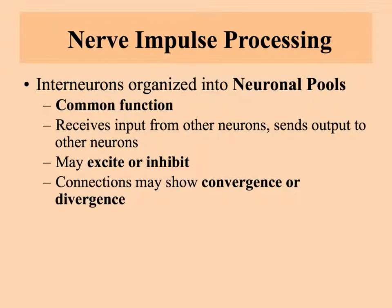To say a little bit more about nerve impulse processing: in the central nervous system, the interneurons are organized into neuronal pools, which have a common function. We've got places in your brain where a number of neurons are working together, receiving input from other neurons and sending output to different neurons. These neuronal pools may either excite or inhibit actions, and their connections are bringing together or sending out to more and more neurons.